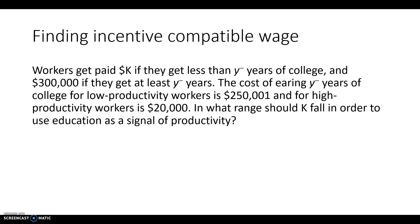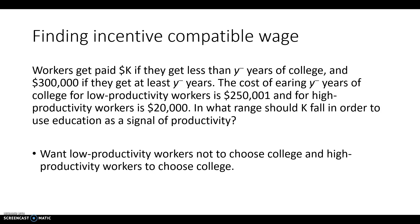Let's think about paying people with less than Y-bar years of college K dollars, and paying everyone with at least Y-bar years of college $300,000. If the cost of earning that college degree for low productivity workers is $250,000 and for high productivity workers it's $20,000, we need to think about what range K — the amount paid to lower-years-of-college workers — should fall in, in order to use education as a signal of productivity.